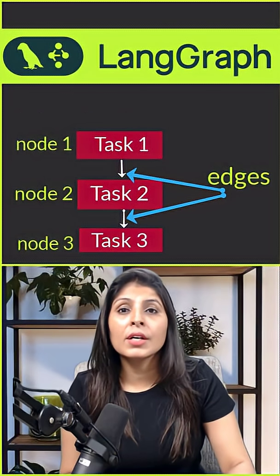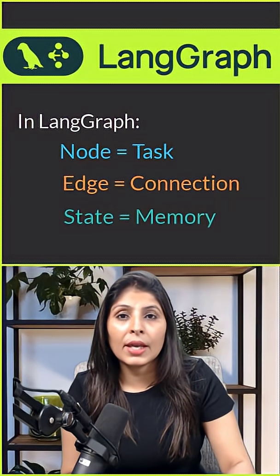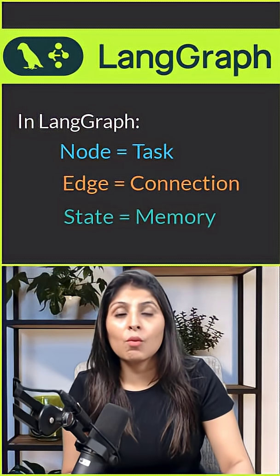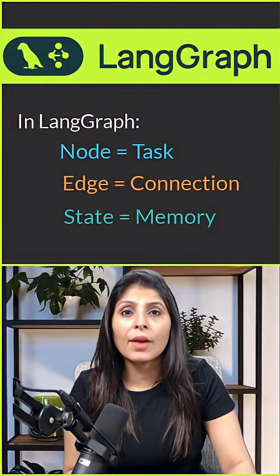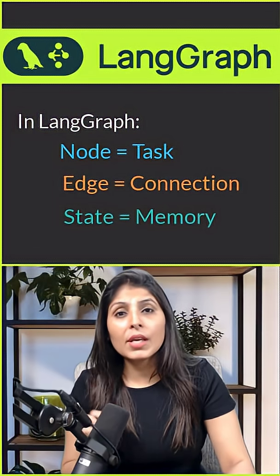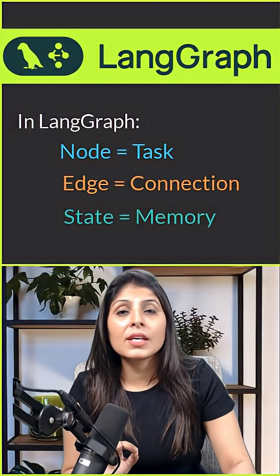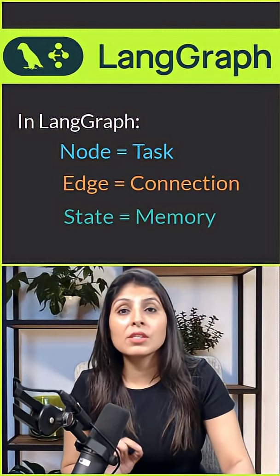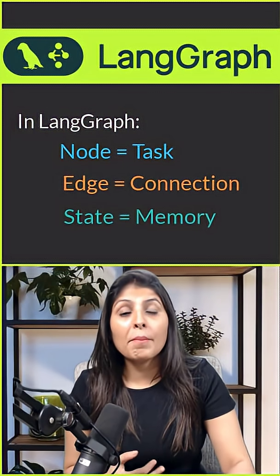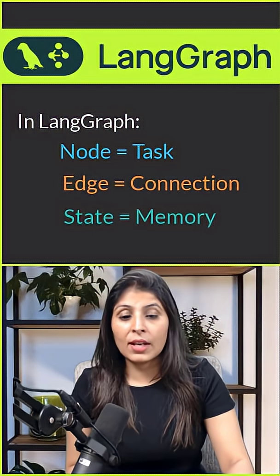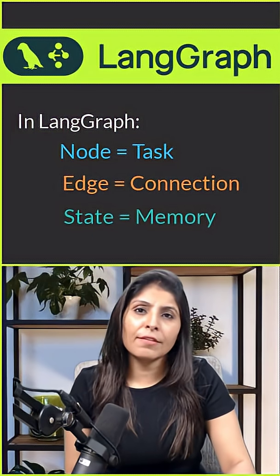There is a concept called state. State is like a memory for the AI app — it remembers everything: what happened, what worked, what didn't work, and what still needs to be done. Because of these nodes, edges, and state, our app can make choices depending upon the situation, try backup plans if one task failed, and remember past actions to guide future steps.